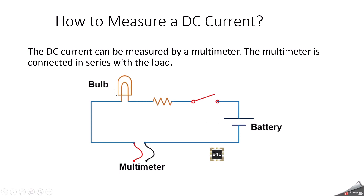You can see here we have a battery and we have a load — you can consider this one as a bulb — and here a multimeter is connected. First, you can turn off the power supply to the circuit in which you want to measure the DC current. Then, set the multimeter or ammeter to the DC current range that is appropriate for the expected current in the circuit, and make sure that the meter is capable of measuring the expected range of current. Then, you can connect the multimeter or ammeter in series with the circuit. This means you need to break the circuit at some point and connect the positive and negative leads of the meter in series. You can see here — the red color will be connected with the load and the black color will be connected with the negative terminal of your battery.